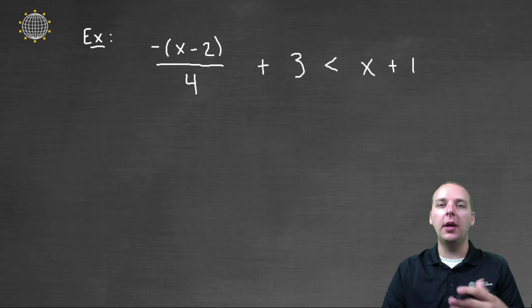If at any point we ever have to multiply or divide by a negative number, we'll have to remember to take the inequality and flip it around to face the other direction.